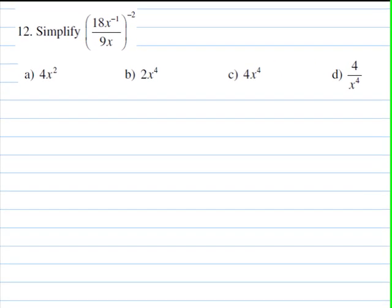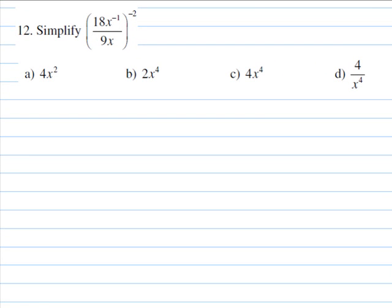Now we want to simplify this fraction. We have here exponents, like this negative 2 and negative 1. So in this case, usually we can go different ways, not just one way. One could first apply this negative 2 power to this numerator and denominator separately and then simplify from there. Or we can also simplify this fraction at first, then apply this negative 2.